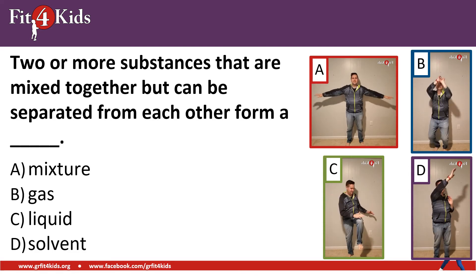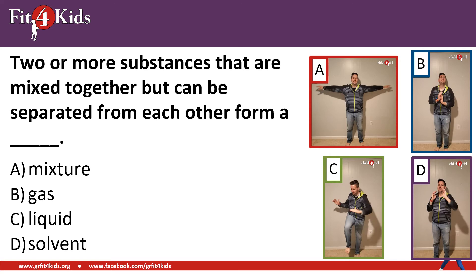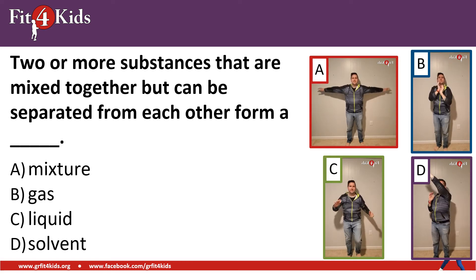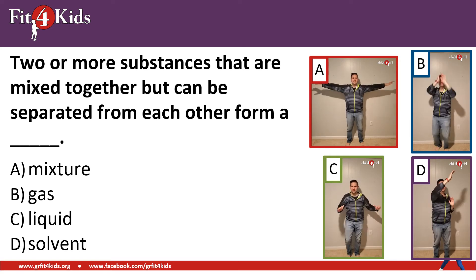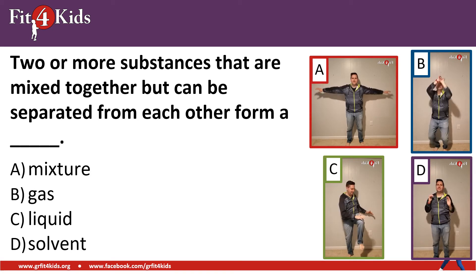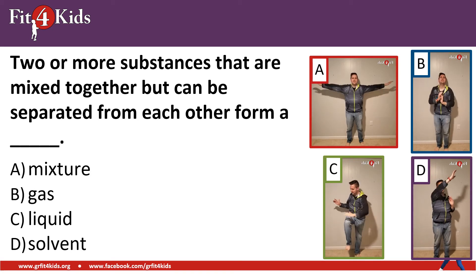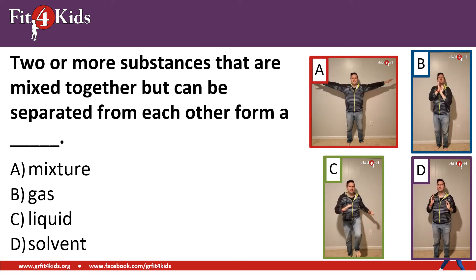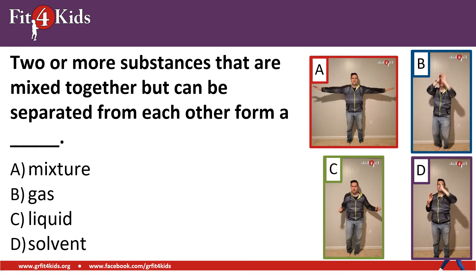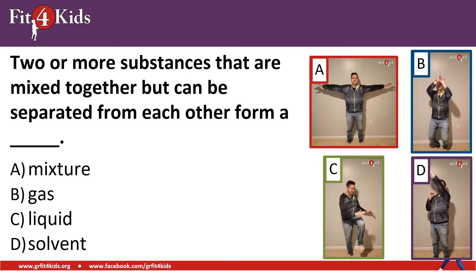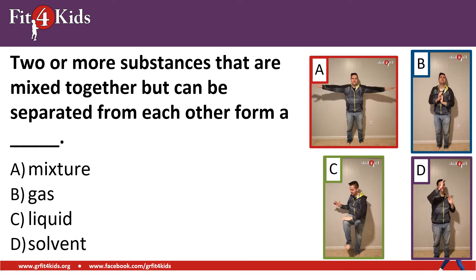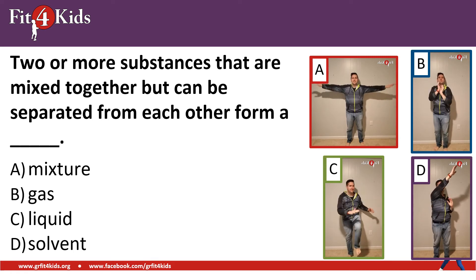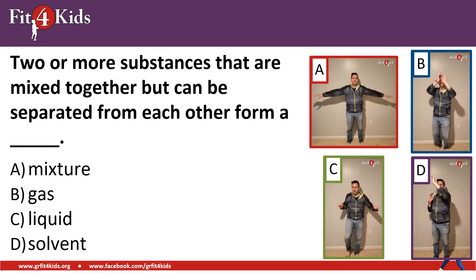Two or more substances that are mixed together but can be separated from each other form a blank. A, mixture; B, gas; C, liquid; D, solvent. The best answer here is arm circles because A, mixture, is your answer.